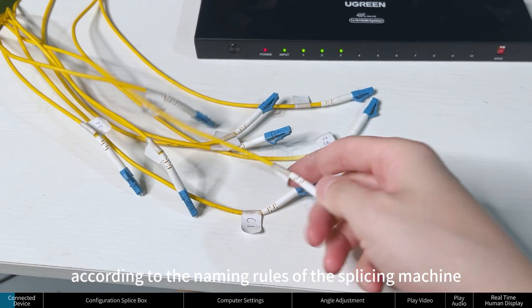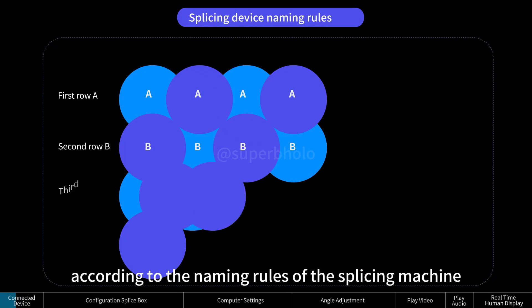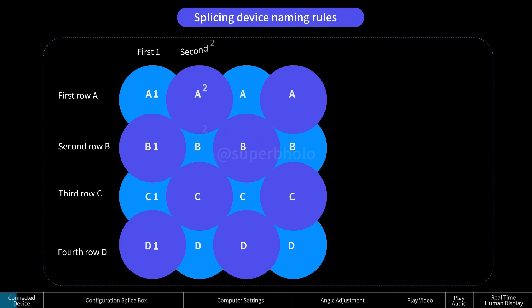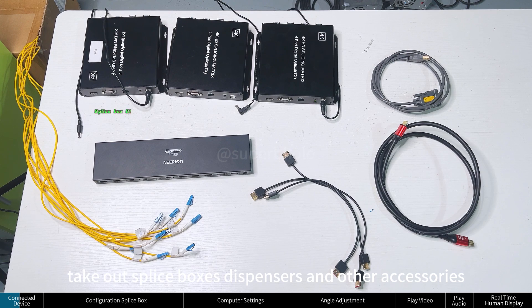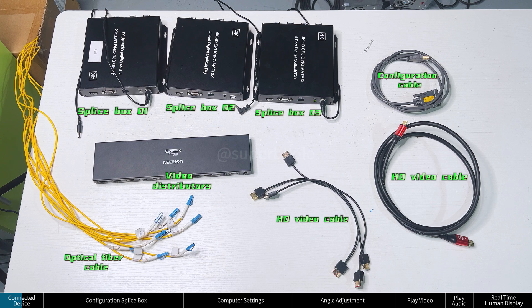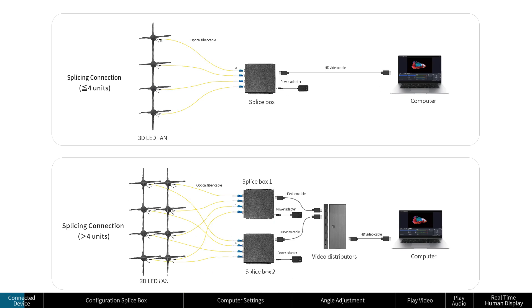According to the naming rules of the splicing machine, take out splice boxes, dispensers, and other accessories. Note that splicing of four sets or less does not require a splicer — only one splicing box is needed.